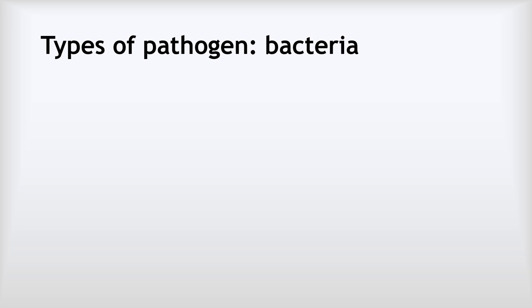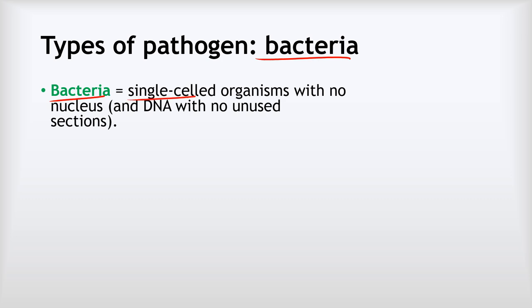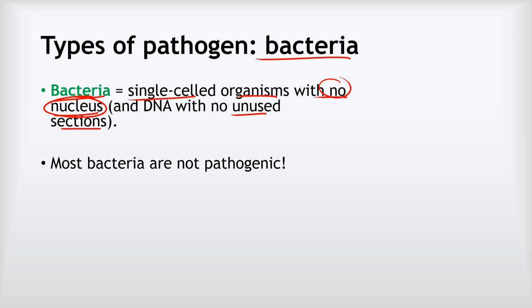Now we're going to look at the different types of pathogen. Our first kind is bacteria. Bacteria are single-celled organisms with no nucleus, so the DNA floats freely in the cytoplasm, and the DNA has no unused sections. It's really important to note that most bacteria are not pathogenic — most bacteria are completely harmless. In fact, we need bacteria to survive; we've got trillions of them in our digestive systems helping to digest our food.